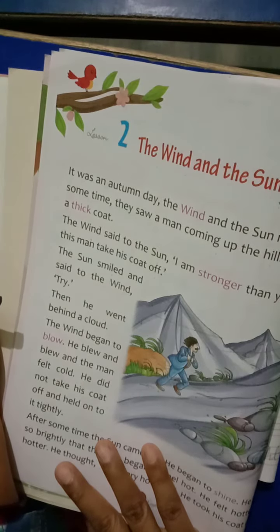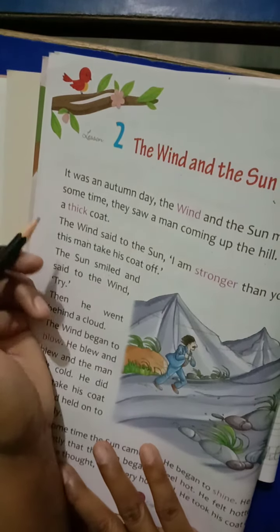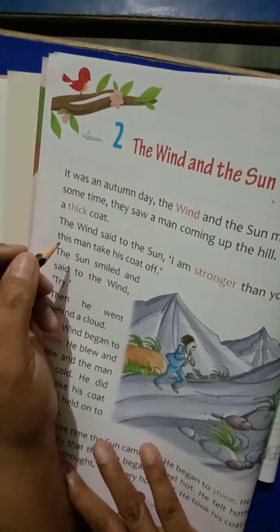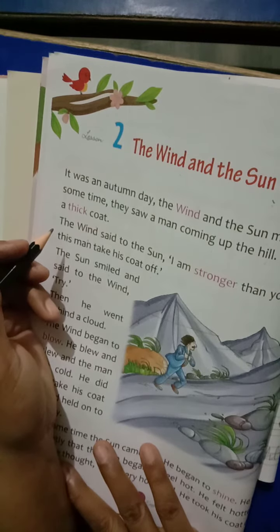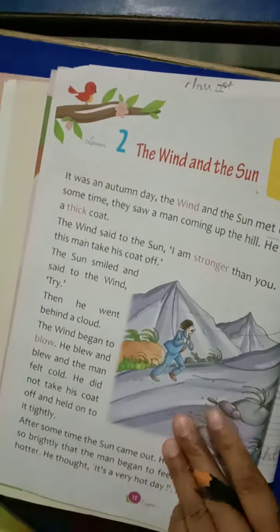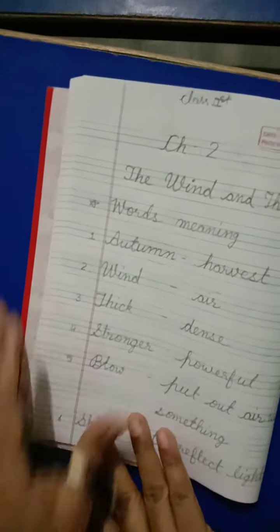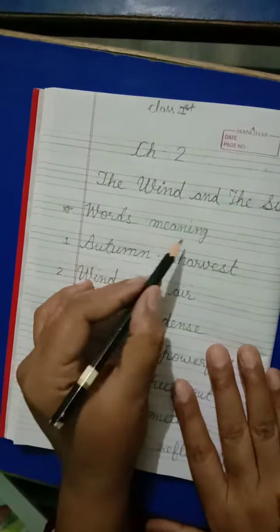Good morning class. We are going to learn chapter 2 in English subject, the wind and the sun. Today's topic is words meanings.